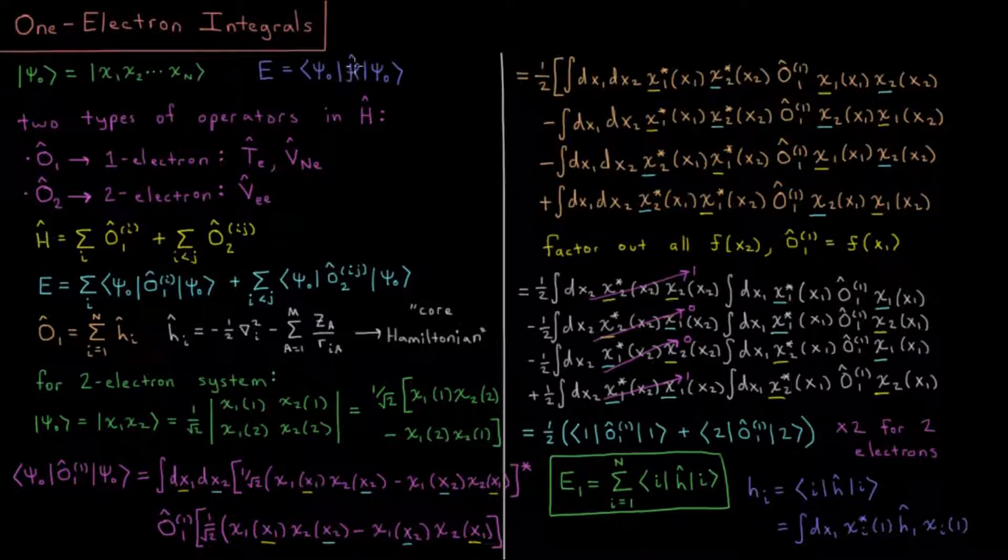Here I have the Hamiltonian H indicated as some script H for some reason. It's fancy. So the energy is going to be the integral over all coordinates of all electrons, ψ* H ψ.